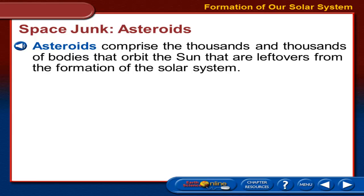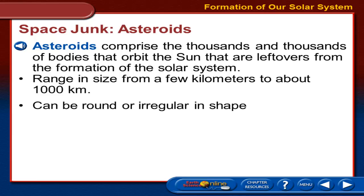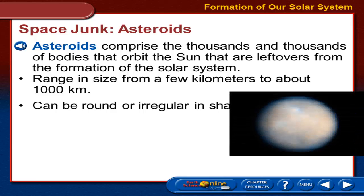Asteroids are mostly found, if you watch that video on how the solar system formed, between Mars and Jupiter. They're leftovers from the beginning of the solar system. They can range in size from very small to very, very large, and they can have all kinds of different shapes. Some are round, like planets. This is Ceres, the largest asteroid. In fact, early on when it was first discovered, we thought it was a planet.